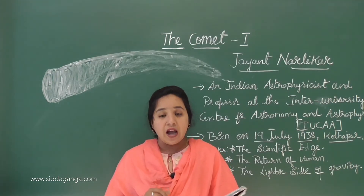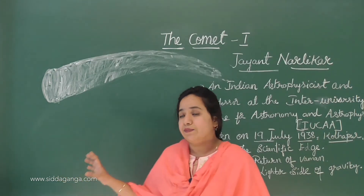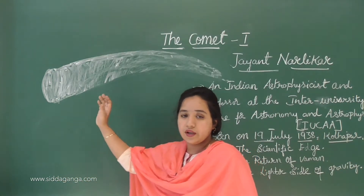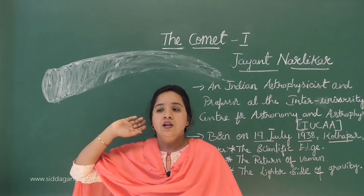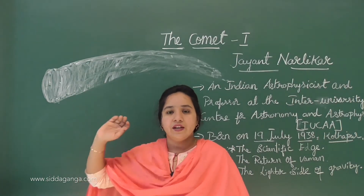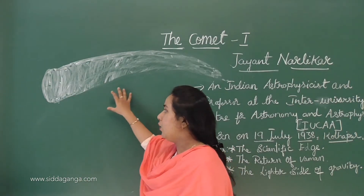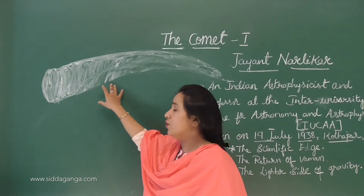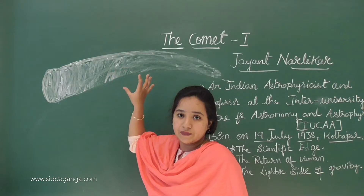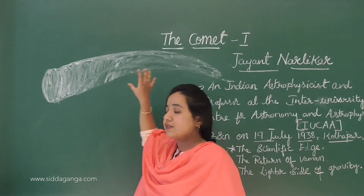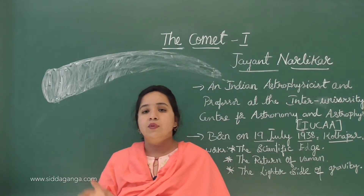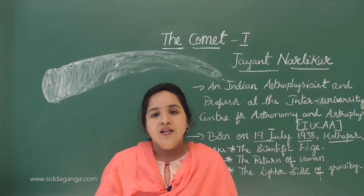Sometimes a comet also has a tail. When it moves and passes close to the sun, it looks like there is a tail trailing behind it. This is about a comet.